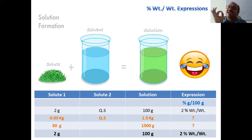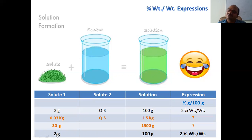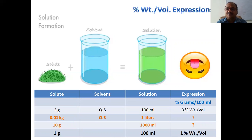For percentage weight by weight: the unit is grams per 100 grams. Example: 2 grams of solute taken, finally made a 100 gram solution — that is 2% weight by weight. Problem: 0.03 kg solute in 1.5 kg solution. Convert: 0.03 kg = 30 grams, 1.5 kg = 1500 grams. Divide both by 15 to get per 100 grams: 30/15 = 2 grams per 100 grams = 2% weight by weight.